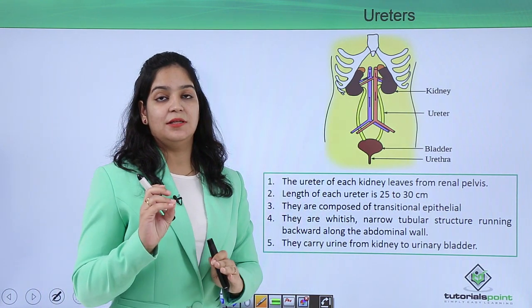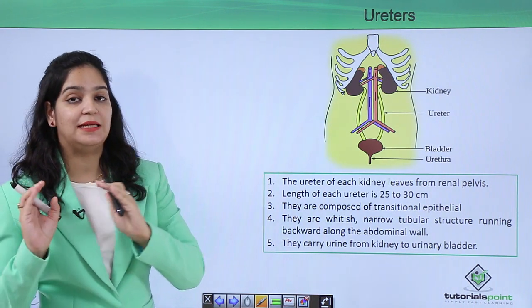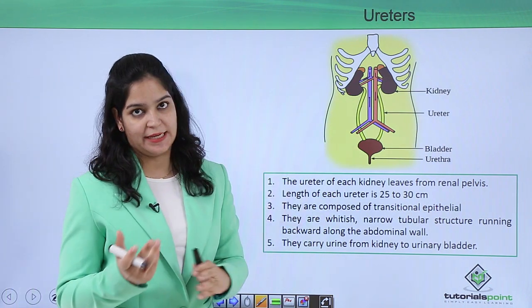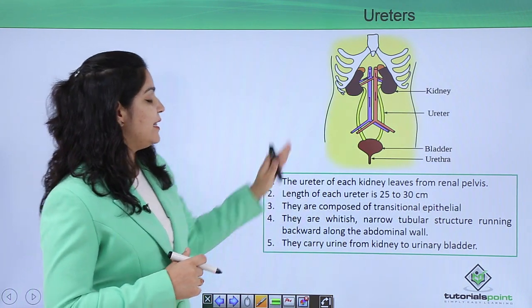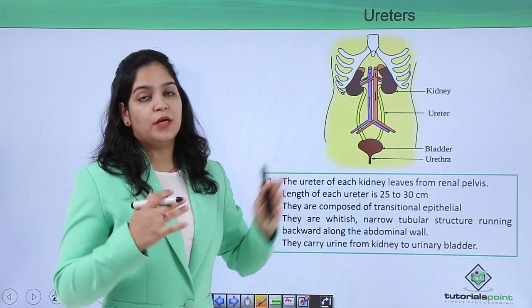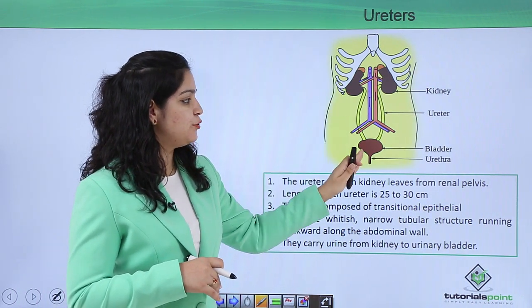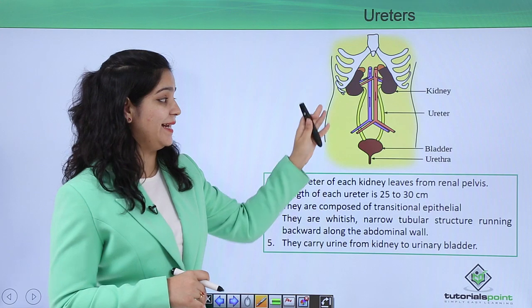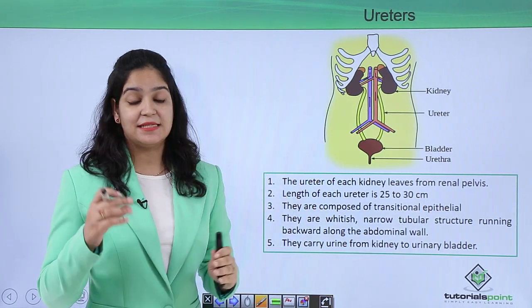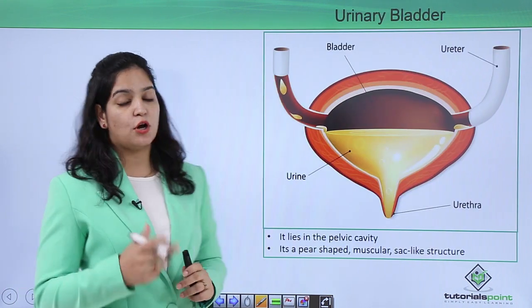Ureters are composed of transitional epithelium, which can easily expand or relax, making it very important in urination. They are whitish, narrow tubular structures present at the back of the abdominal wall. They carry urine from the kidney to the bladder, and if damaged, there would be no connection between the kidney and the bladder.